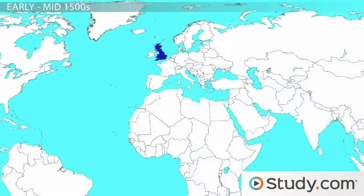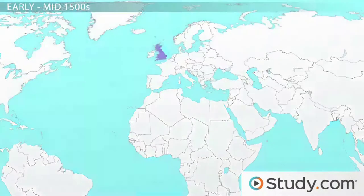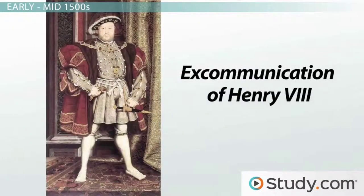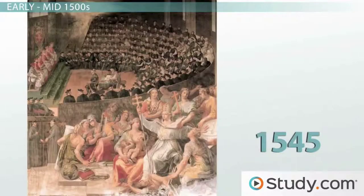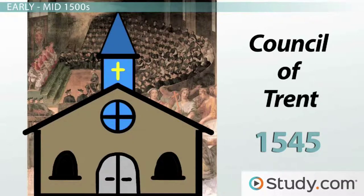Again, not wanting to be left out, England joins the historical fray with the excommunication of Henry VIII by the Pope, which occurred in 1538 over some trivial little matters like marriage annulments, cutting off wives' heads, and Henry declaring his supremacy and starting his very own church. In 1545, we have the Council of Trent, a series of three meetings held by the Catholic Church in order to answer the charges of the Reformation and to dogmatically solidify its beliefs. To this day, it's considered one of the most important councils of Catholic history.